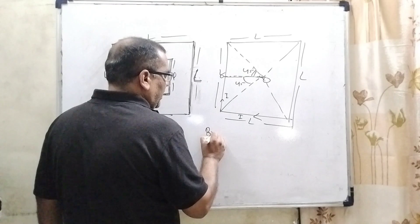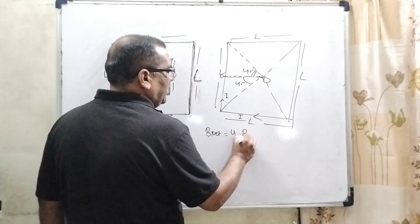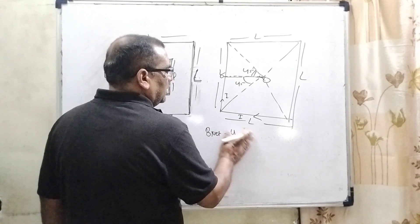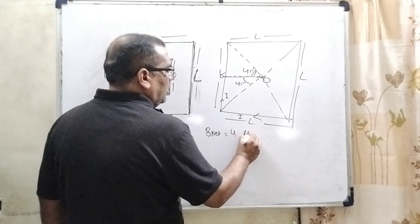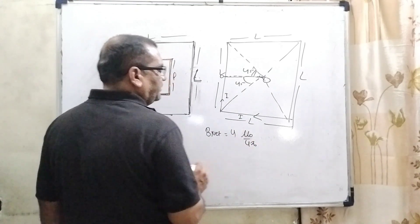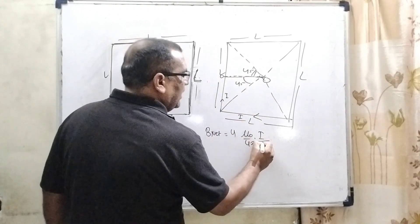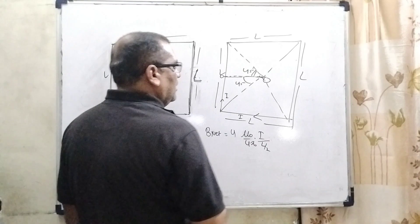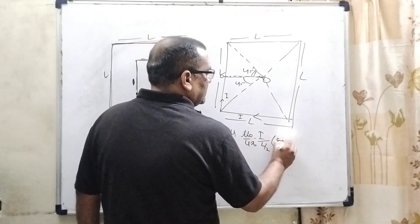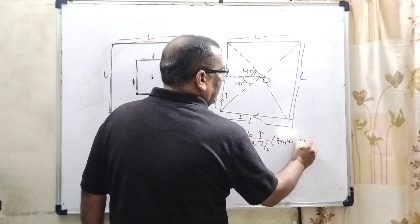So net magnetic field is 4 times of B equals mu0 upon 4 pi, I by, and what is the length of the system? That is L by 2. And angle sin 45 plus sin 45.